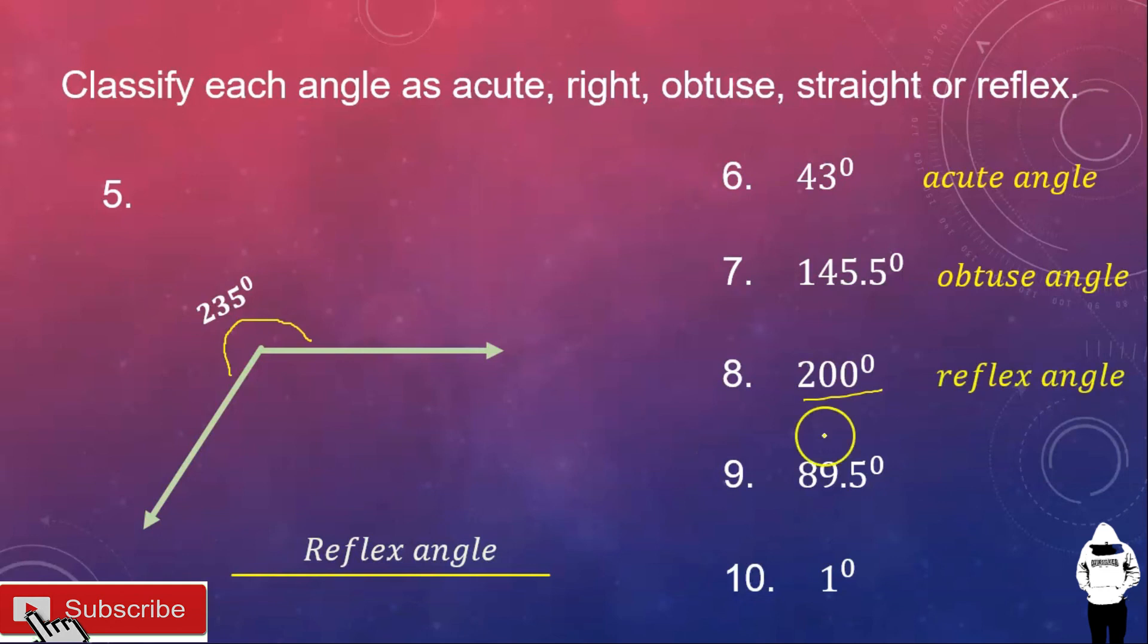Number nine, 89.5 degrees. So, this is between 0 and 90 degrees. So, this is an acute angle.